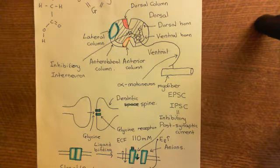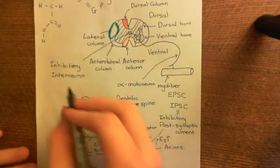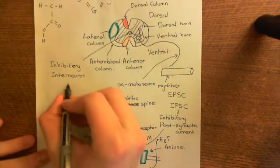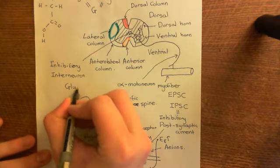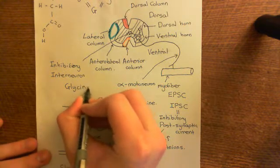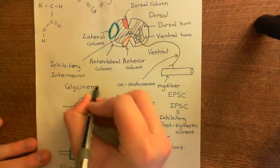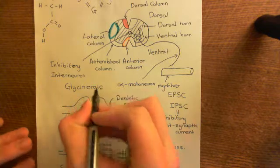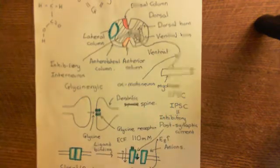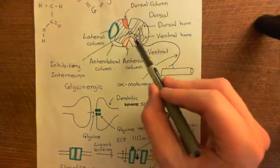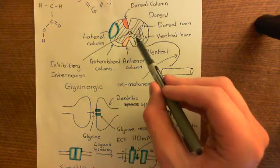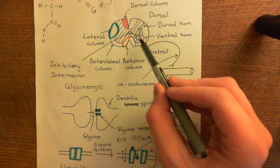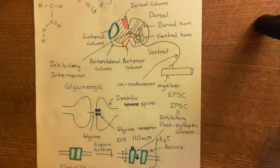If we were to take away this glycinergic transmission — and by the way, when you've got neurotransmission that is involving glycine, you will often hear that referred to as glycinergic neurotransmission. So if we were to reduce the glycinergic neurotransmission in the spinal cord, what do you think would happen?